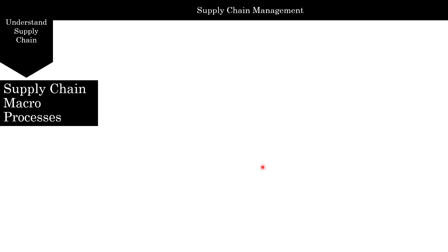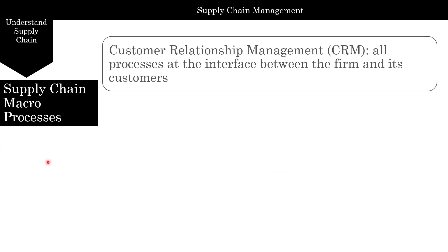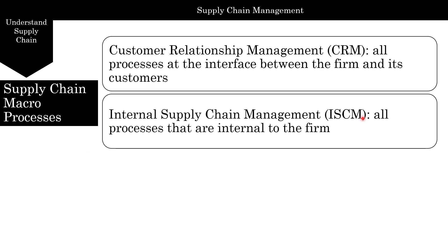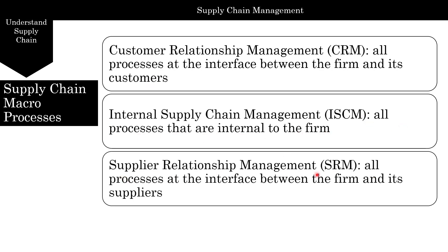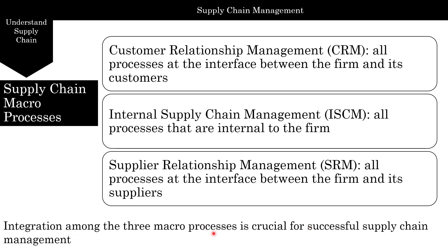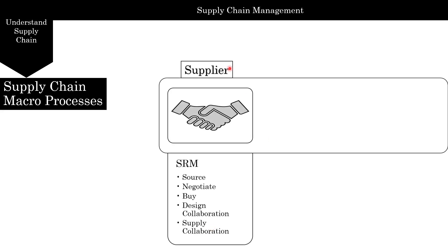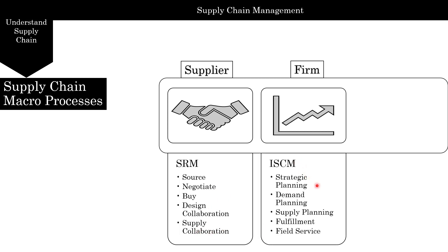Finally, we look at the macro processes in a supply chain — there are essentially three. Customer relationship management covers all processes at the interface between the firm and its customers. Internal supply chain management covers all processes internal to the firm. Supplier relationship management covers all processes at the interface between the firm and its suppliers. Integration among the three macro processes is crucial for successful supply chain management. For supplier relationship management, the processes include sourcing, negotiating, buying, design collaboration, and supply collaboration. For internal supply chain management: strategic planning, demand planning, supply planning, fulfillment, and field service.